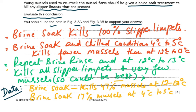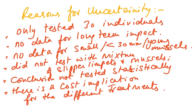Additional reasons for uncertainty: there is a cost implication for the different treatments, and the cost may outweigh the benefits. To summarize the reasons for uncertainty: only 30 individuals tested; no data for long-term impact; no data for young mussels less than 30 mm; did not test with a mixture of slipper limpets and mussels; conclusion not tested statistically — this point must always be included when such a question arises; and there is a cost implication for the different treatments. That finishes paper 5. Thank you very much for subscribing and watching.